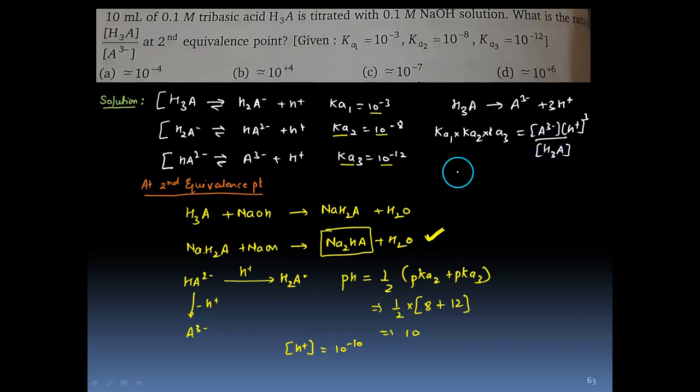Now at second equivalence point, the first stage equivalence has been achieved already. H3A plus NaOH gives NaH2A plus H2O, this is complete. At second, this is also complete. This is the second equivalence point.